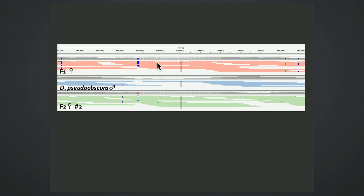Now, the first two individuals here at the top are the parents of this F2 offspring. So this is that heterozygous F1 that I described when describing the cross, and this is the homozygous pseudoobscura that it was crossed to.